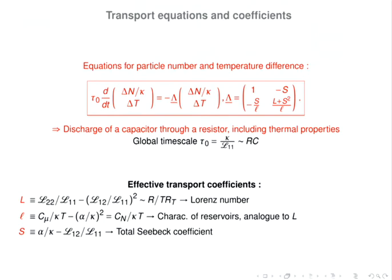Combining these two sets of equations gives a simple equation describing the time evolution of chemical potential and temperature difference. Working further, one finds the evolution of delta-N, the particle number difference, and delta-T, given by a transport matrix lambda. This equation describes the discharge of the capacitor including thermal properties, and a new timescale appears—the RC timescale of the linear circuit.